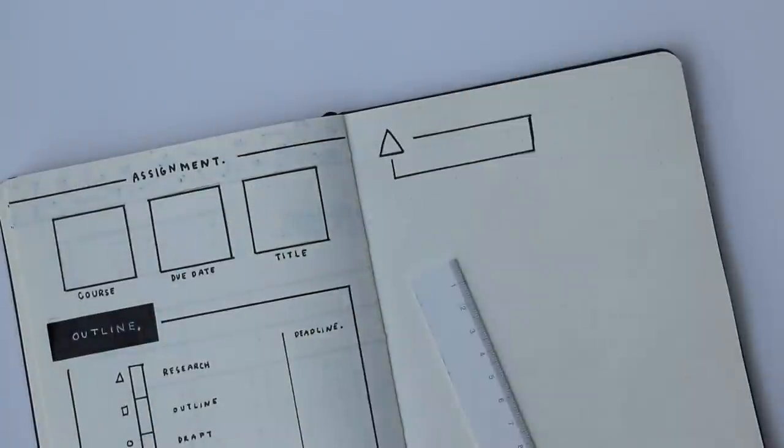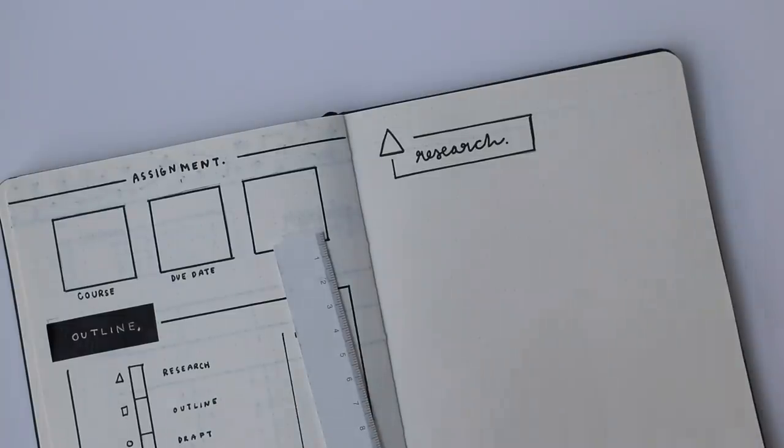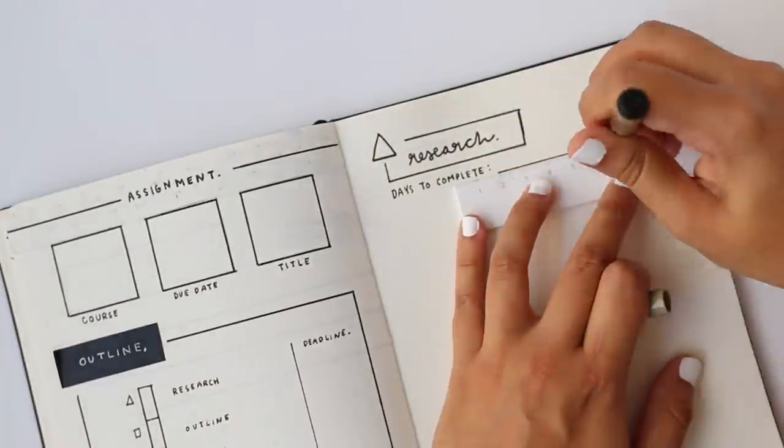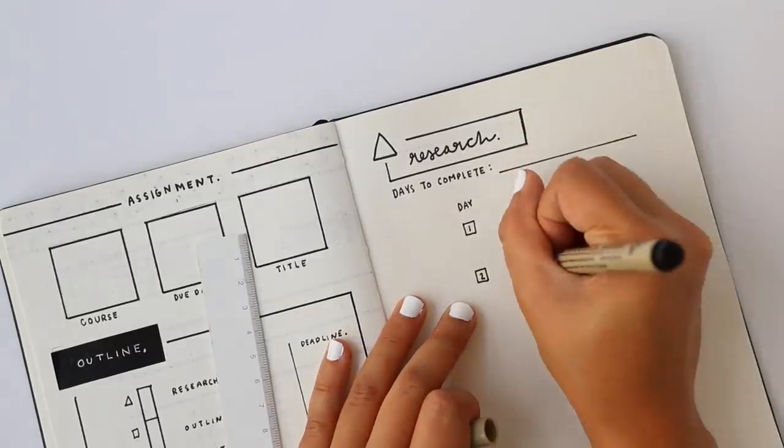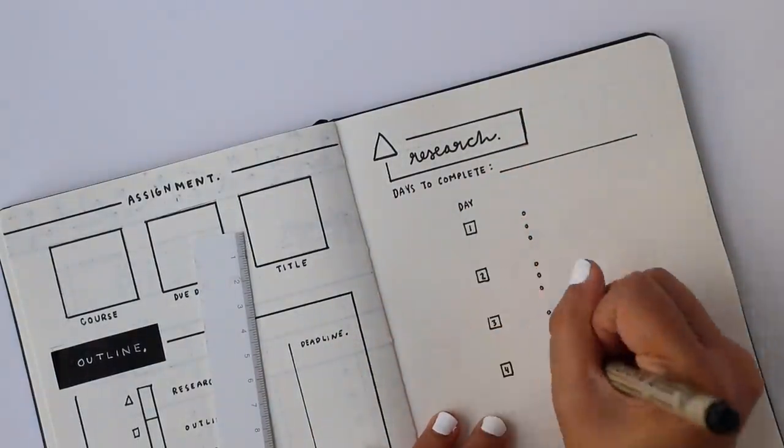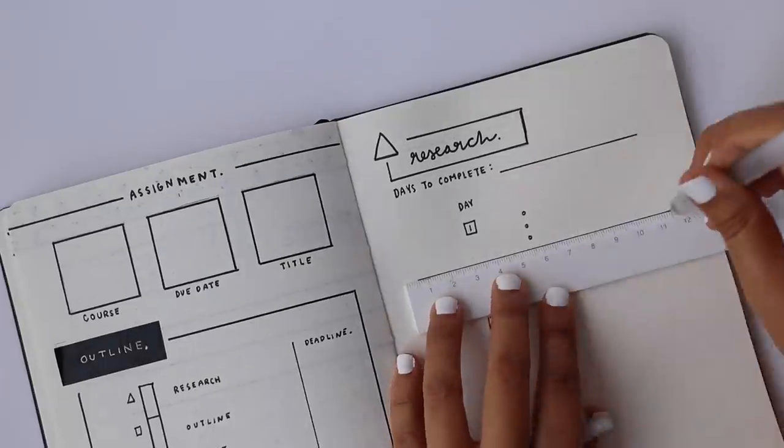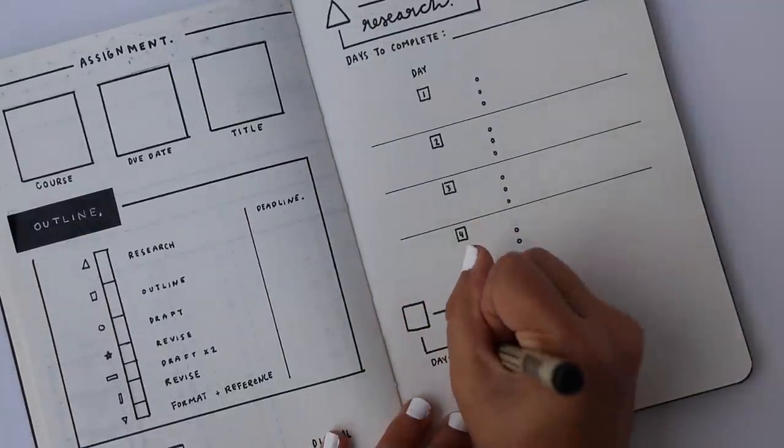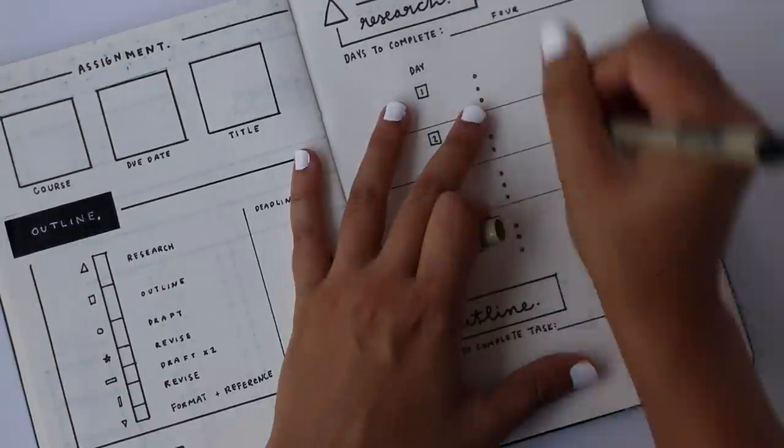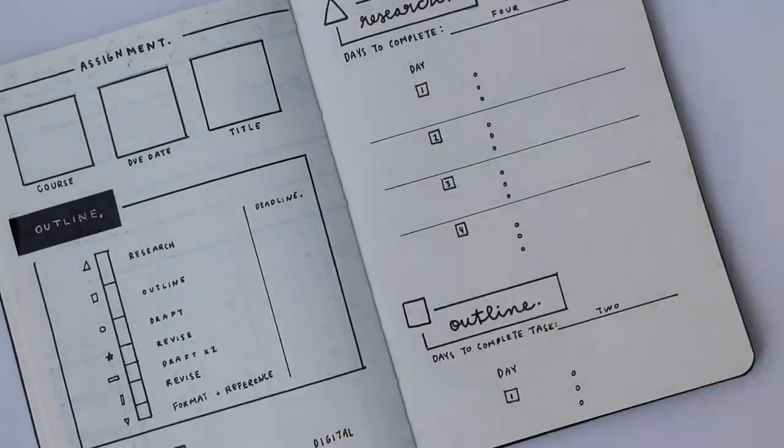Once you've got a general timeline in place the rest of the spread is where you can spend time breaking down those bigger tasks into smaller to-dos. I find whenever you've got a big project it can be really comforting to break things down into smaller pieces. It makes them a lot less scary and also just easier to know exactly what you need to get done to start pushing forward on your assignment.